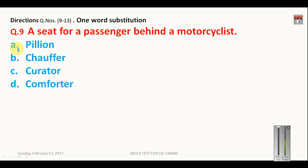Question number 9: Find a seat for a passenger behind a motorcyclist. What is the name of that seat? This is called pillion. Chauffeur will be a driver. Curator is a head of a museum. So this will not be your answer. Comforter is a sofa. So here your answer will be pillion.